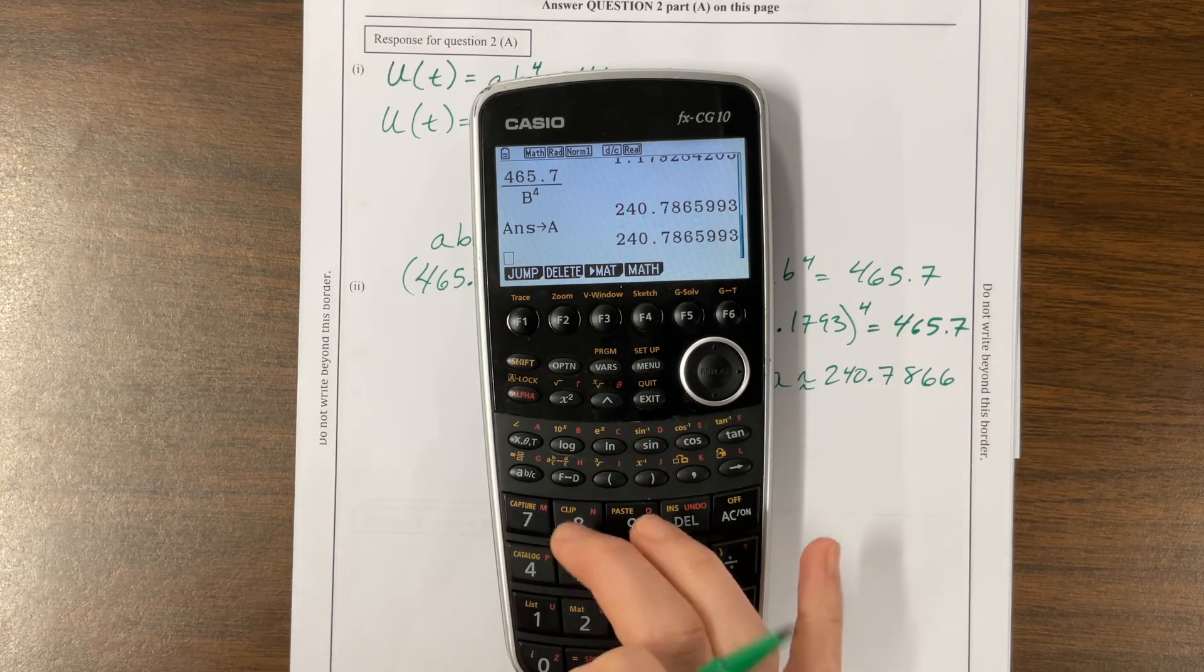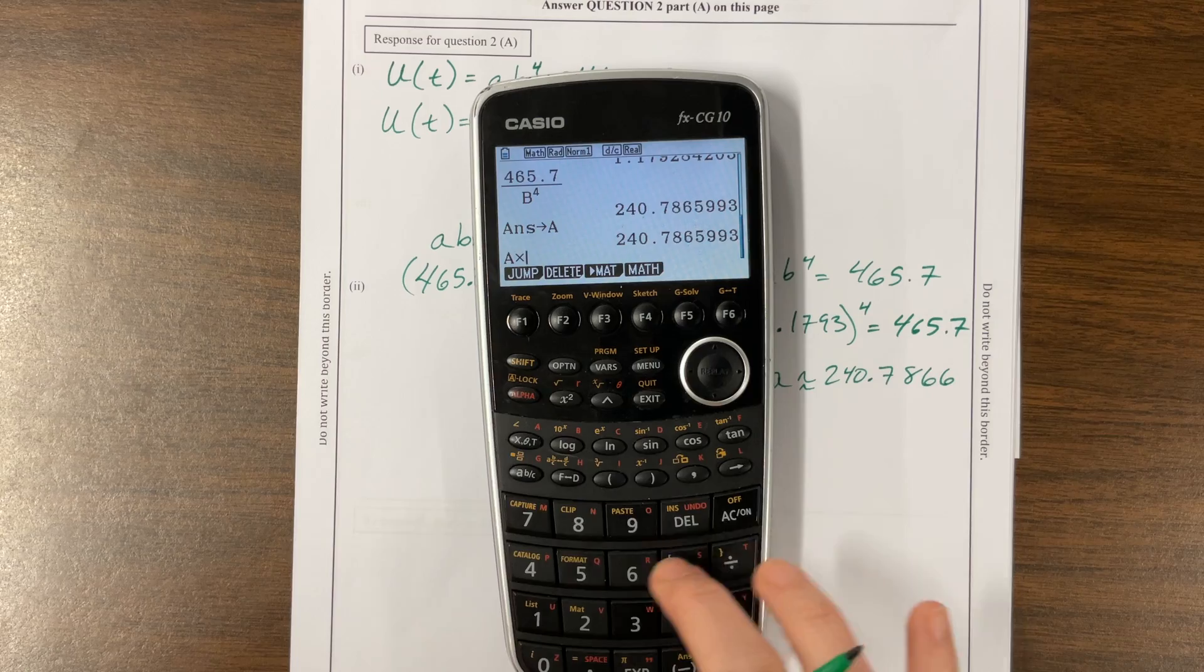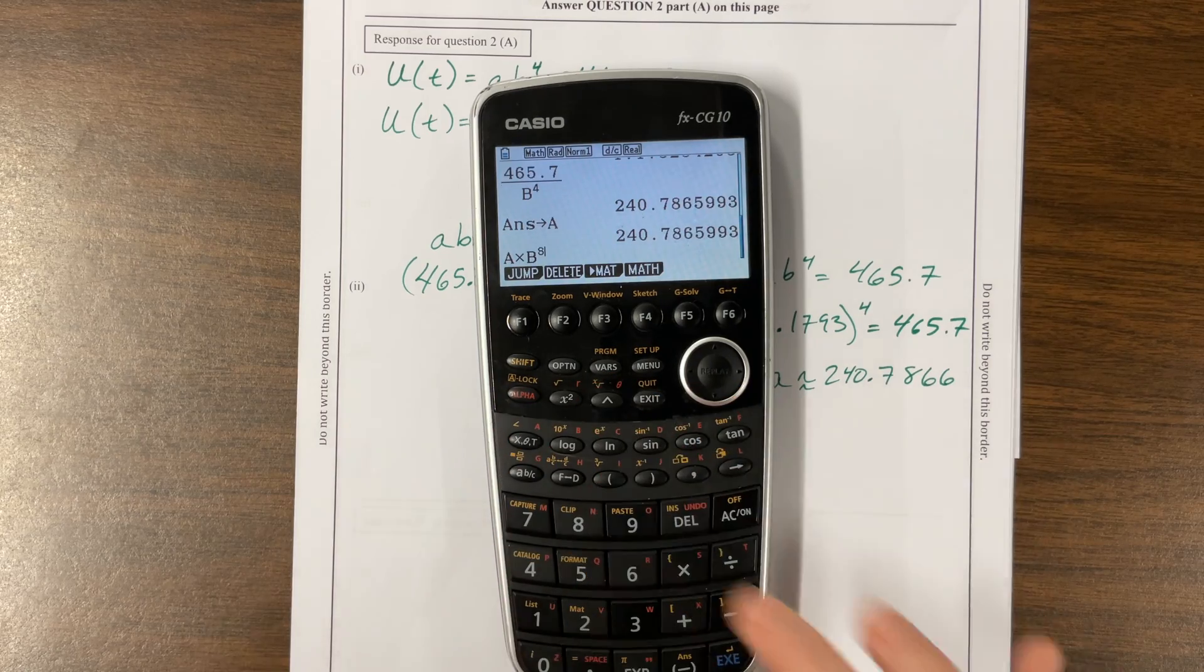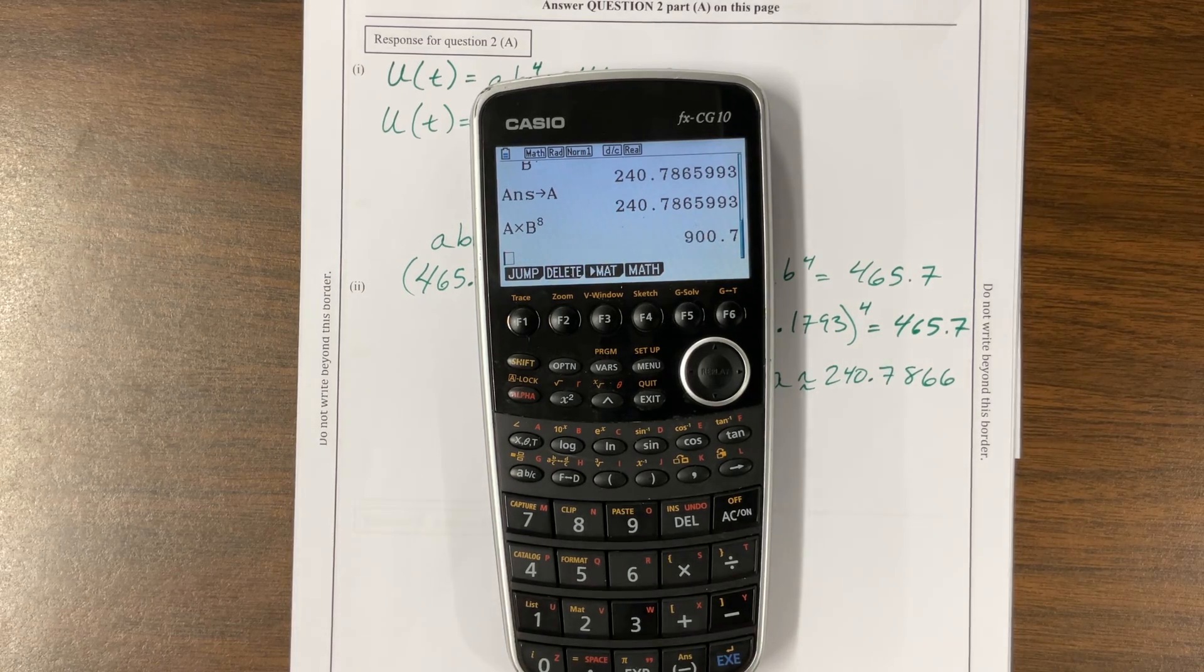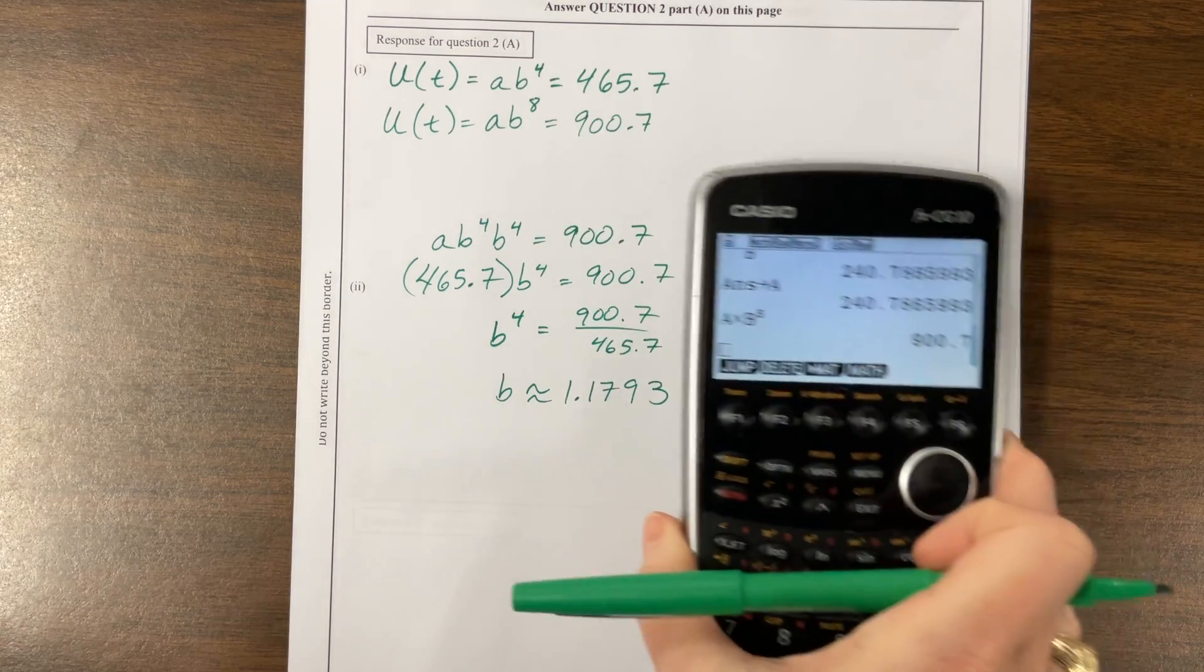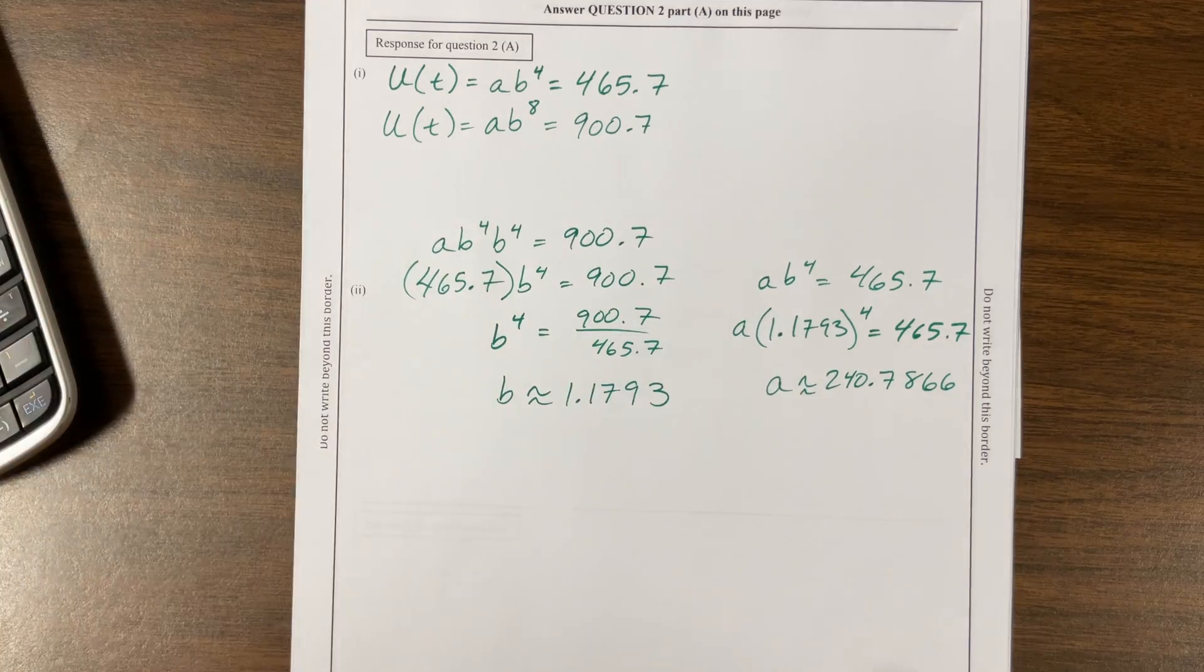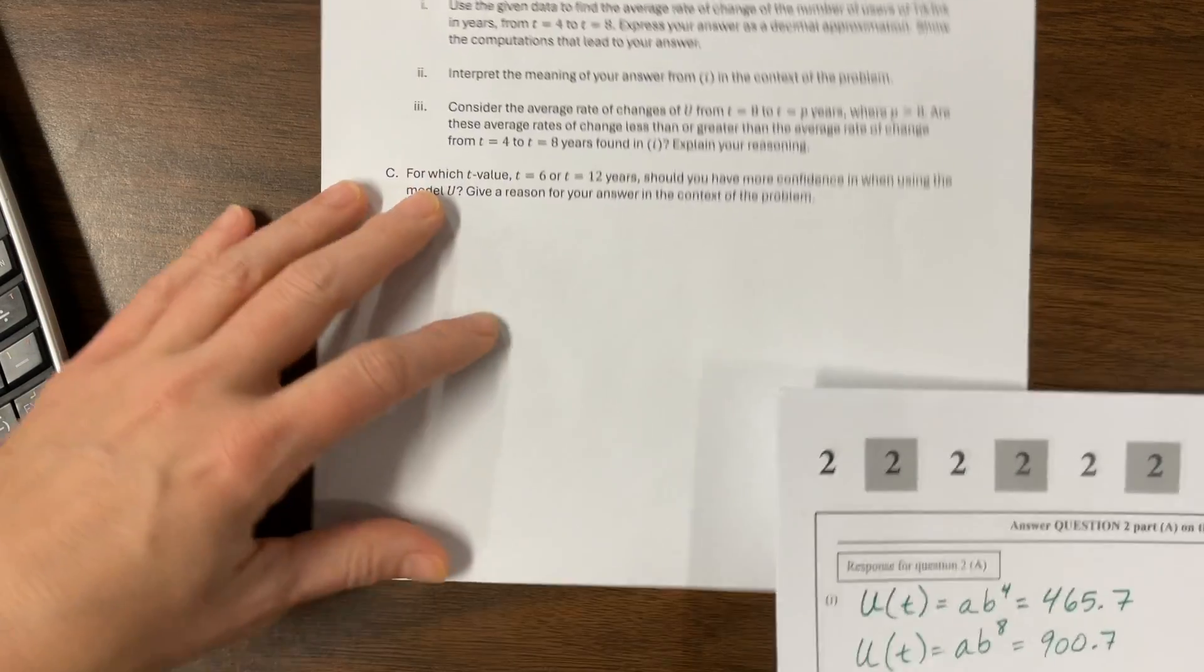Let's see if that makes sense. Let's store this as A. If I take alpha A times alpha B to the eighth, this should equal that 900.7. Well, that's good news. That was a good way to check to make sure we weren't totally off our rockers.